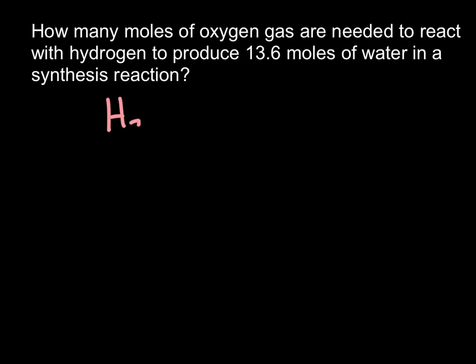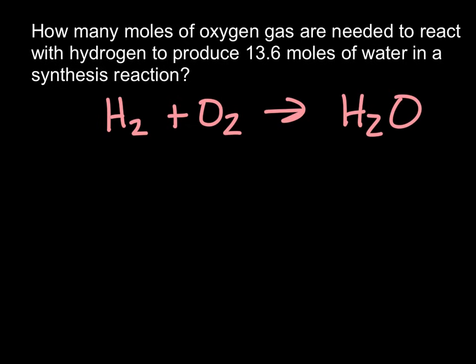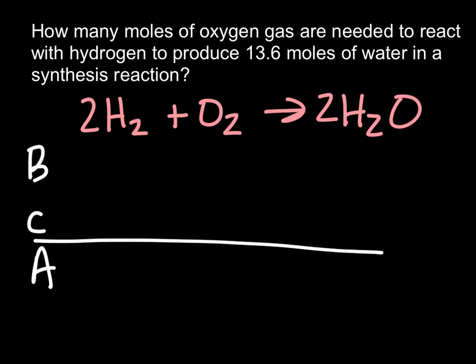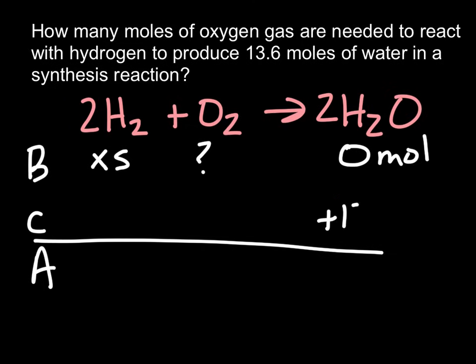First thing we need is a balanced chemical equation. If you don't know how to write one, you may need to go back and look at the video on writing chemical equations. For this reaction we need two H₂ and two H₂O. Once we have our balanced chemical equation we set up BCA — before, change, and after. Before: it doesn't say how much hydrogen we had, so we assume it is in excess. We don't know how much oxygen gas we have, so I'll put a question mark there. It does say we need to produce 13.6 moles of water, and before the reaction started we had zero moles of water. We know we gained 13.6 moles of water, so that goes in our change row.